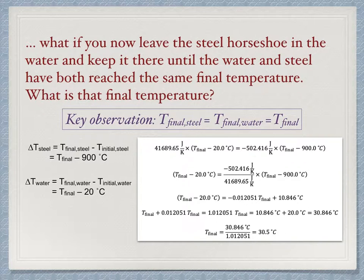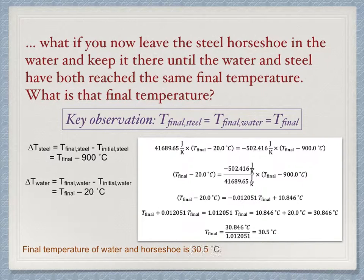Gather the T_final terms together, add them up, divide through to solve for T_final. We get that 30.846 divided by 1.012051 equals 30.5 degrees Celsius. This is the final temperature and is the answer to this second version of the problem.